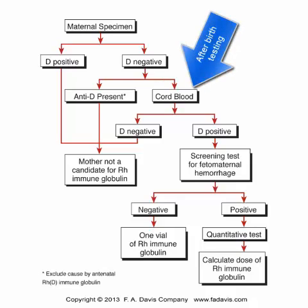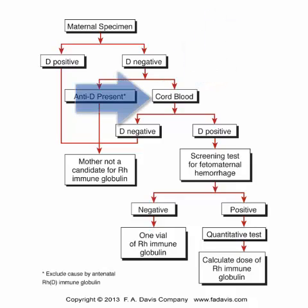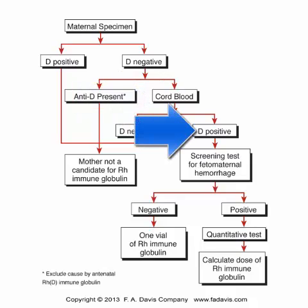After birth, we are concerned with the RH-status of the baby. We get the RH-status, or the D-status, of the baby by testing the cord blood that has baby's blood on it. If that tests positive for the D-antigen, then we need to do further testing.